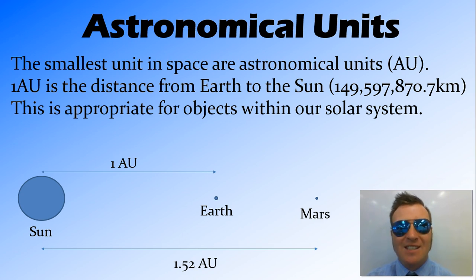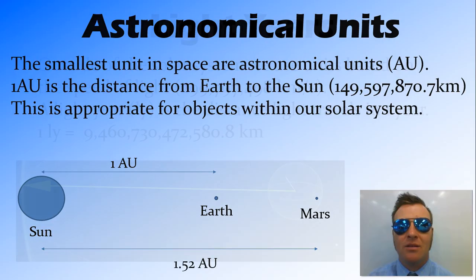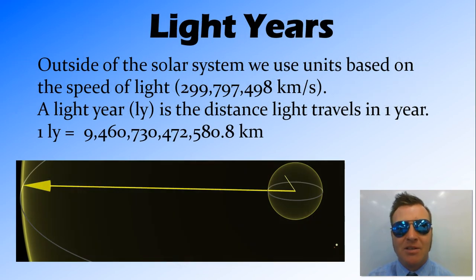When we go outside of our solar system, this distance, which is really, really big, like we're talking 150 million kilometres, gets small. That's where light years come into it.